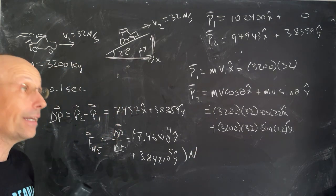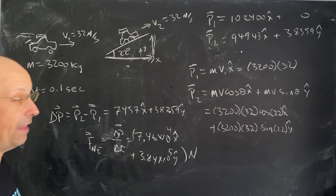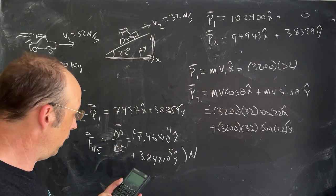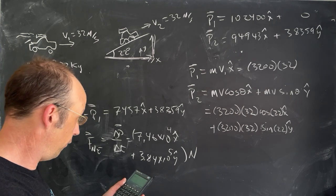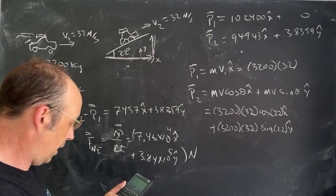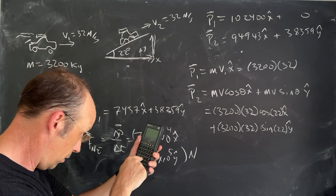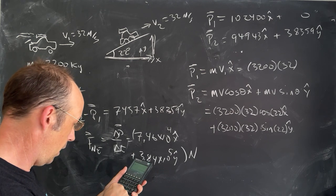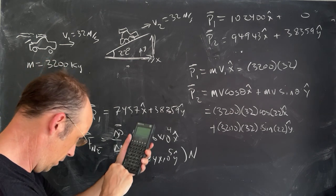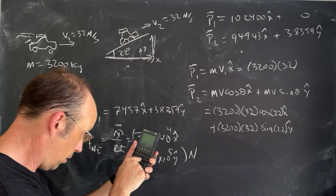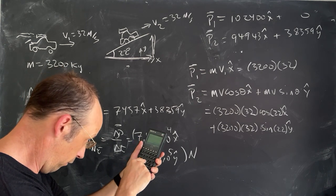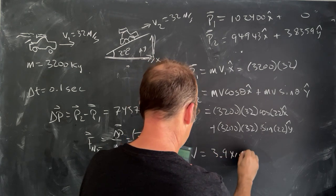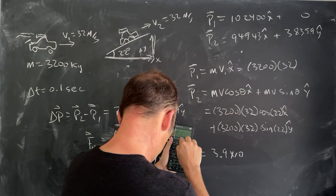Now, I wrote the problem. I said find the magnitude. So, let's find the magnitude of that just to get an idea about the total force. So, I can just take this square plus that square square rooted. Square root, 7.46 times 10 to the 4th squared, and then 3.84 times 10 to the 5th squared, plus square root. And I get a very large force, 3.9 times 10 to the 5th.